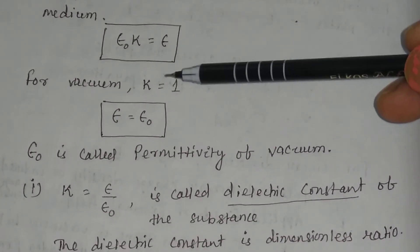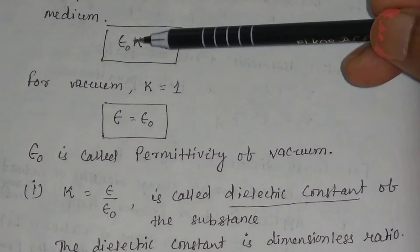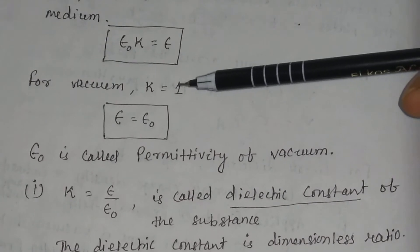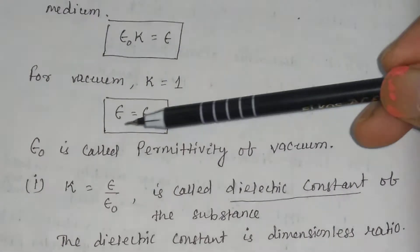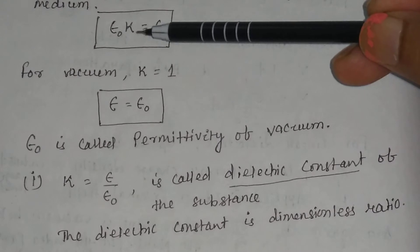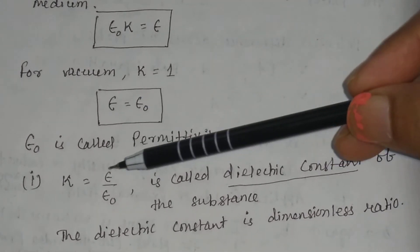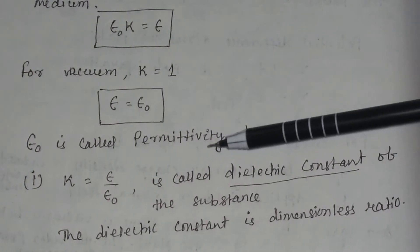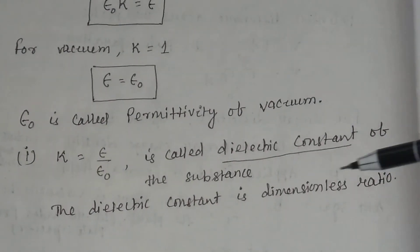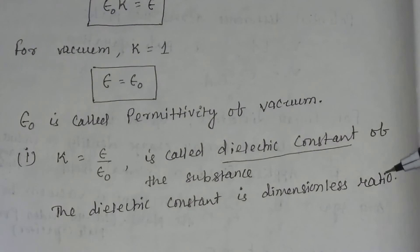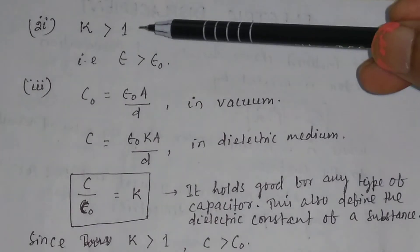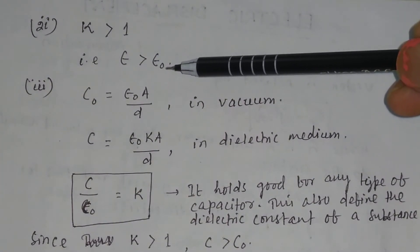For vacuum, k equals 1, so epsilon equals epsilon 0, where epsilon 0 is the permittivity of vacuum. From the relation epsilon 0 k equals epsilon, k equals epsilon divided by epsilon 0, which is called the dielectric constant of the substance. The dielectric constant is a dimensionless ratio. Since k is always greater than 1, epsilon is always greater than epsilon 0.